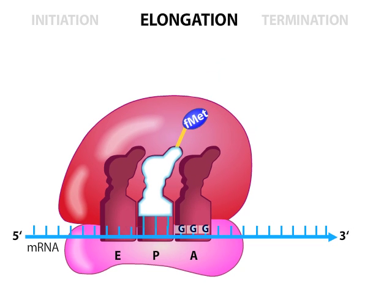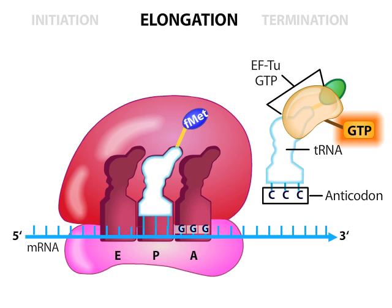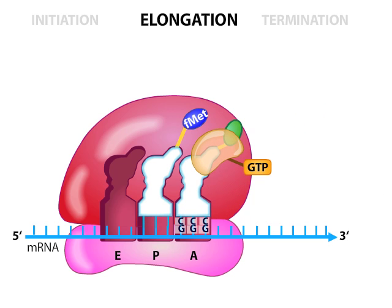Elongation involves the repetition of three steps. First, an elongation factor called EFTU, associated with GTP, binds to free charged aminoacyl tRNAs. This complex enters the A, or acceptor, site. Correct selection of the tRNA complex depends mainly on codon-anticodon pairing. In this example, the anticodon CCC pairs with a GGG codon, and the tRNA carries the amino acid glycine.